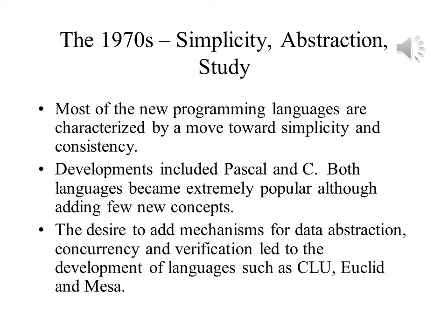In the 1970s, there was an effort to make languages simpler and to ensure that syntax and semantics were tied together better. The 1970s led to two languages that became extremely popular: Pascal and C. Despite their popularity, additional languages added many new concepts to programming language design. There were efforts to add mechanisms to implement data abstraction, concurrency, and verification. CLU introduced the idea of the cluster, which is similar to the object, and the constructor — a method called to help create an object.